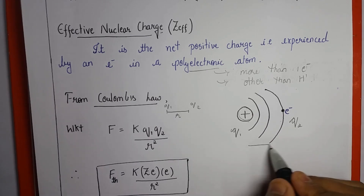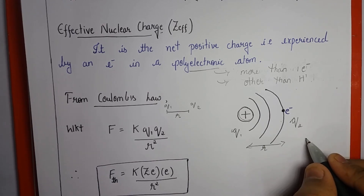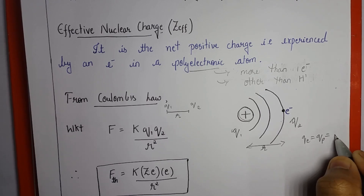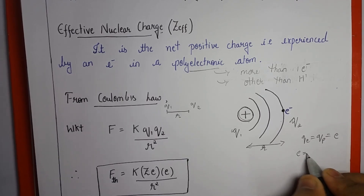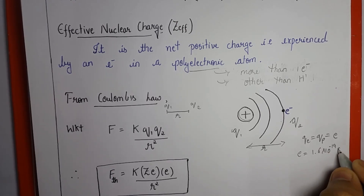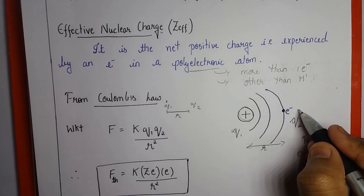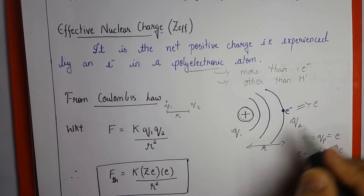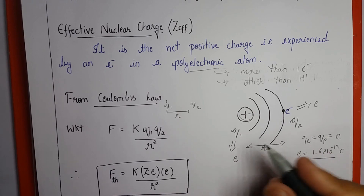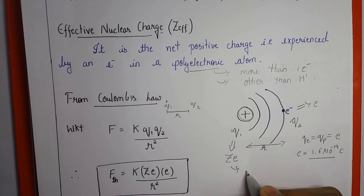Let the nucleus and the electron be separated by distance r. The charge of the electron equals the charge of the proton, represented by e, where e equals 1.6 × 10⁻¹⁹ coulombs. The total number of protons present in the nucleus is represented by Z, where Z denotes the atomic number.